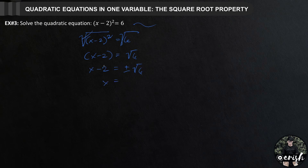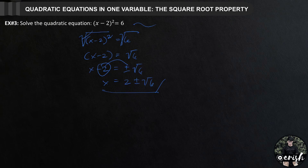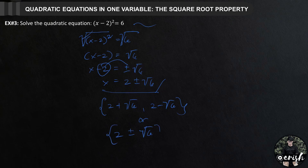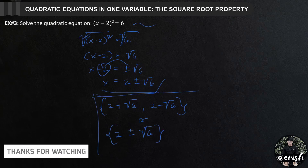Since we are solving for x, we move negative 2 to the other side. This gives x equals 2 plus or minus square root of 6. So this is the proposed solution for example number 3. By checking both values in the original equation, we can confirm the solution set is 2 plus square root of 6 and 2 minus square root of 6, or written as 2 plus or minus square root of 6. Therefore, this is the answer for example number 3.